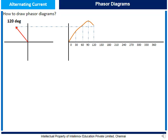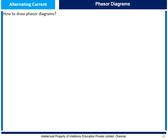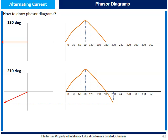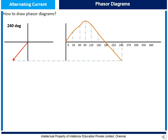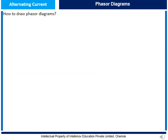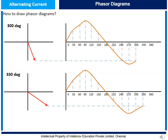At 180 degrees the orange line in the phasor diagram touches zero, and at 210 degrees it enters the negative zone. As the red arrow rotates to 240 degrees the orange line grows in the negative direction, reaching the negative peak at 270 degrees. At 300 degrees the line moves away from the negative peak, and at 330 degrees it tends to move back towards the horizontal axis.